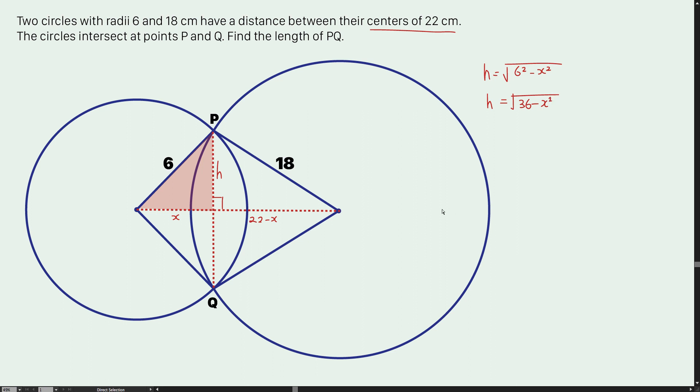And now I'm going to label another triangle in green color located on the top right hand side. Let me work out the value of h according to the green triangle. That would be h equals the square root of 18 squared minus (22 minus x) squared.